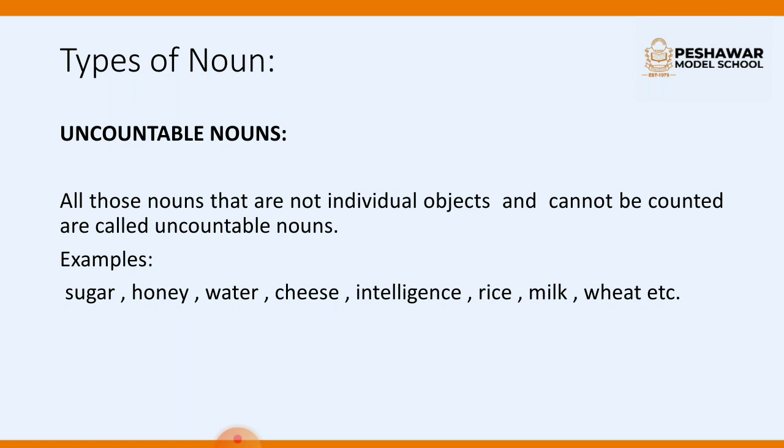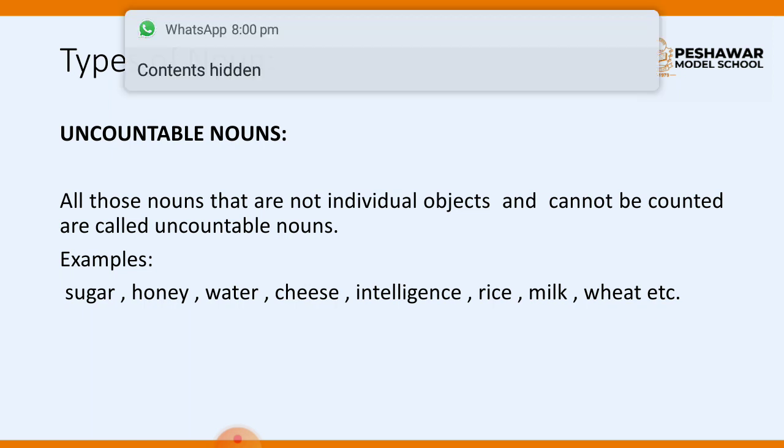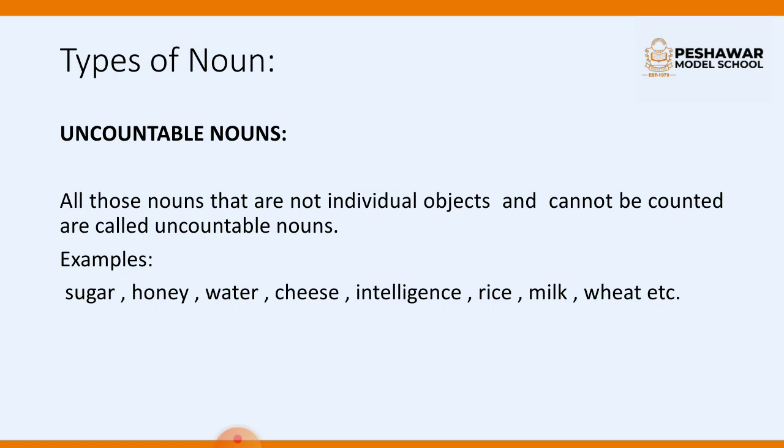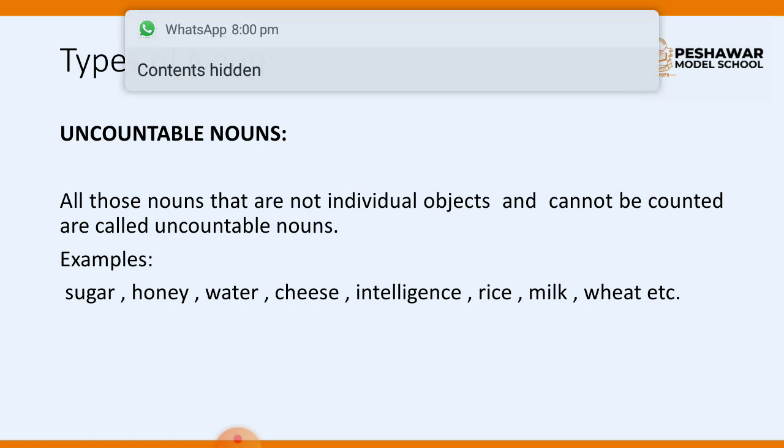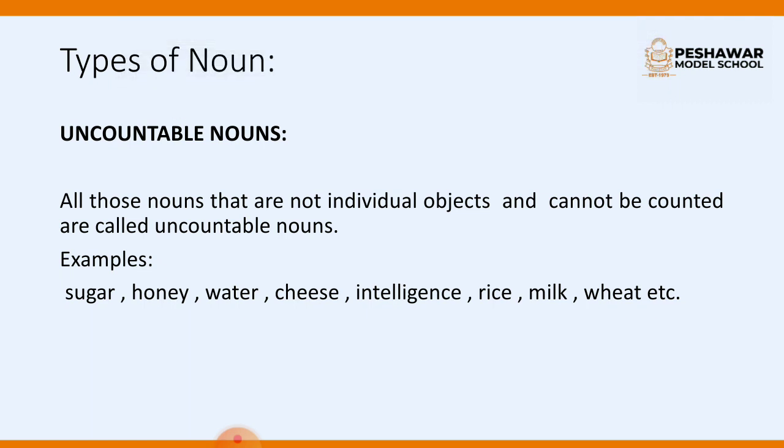For example, we cannot count milk, but we can count bottles of milk, liters of milk, or glasses of milk. Some more uncountable nouns: sugar, honey, water, cheese, intelligence, rice, milk, wheat, advice, information, news, furniture, luggage, water, electricity, gas, power. We usually treat uncountable nouns as singular — we use a singular verb with them. For example: 'This news is very important,' 'Your luggage looks heavy.'